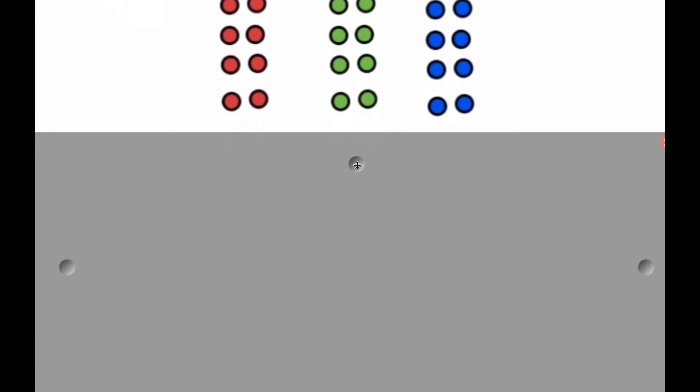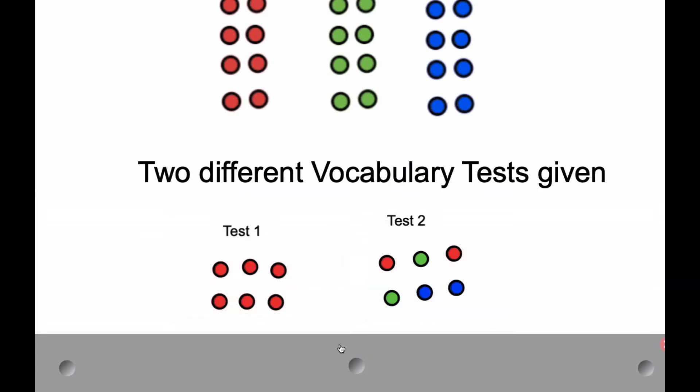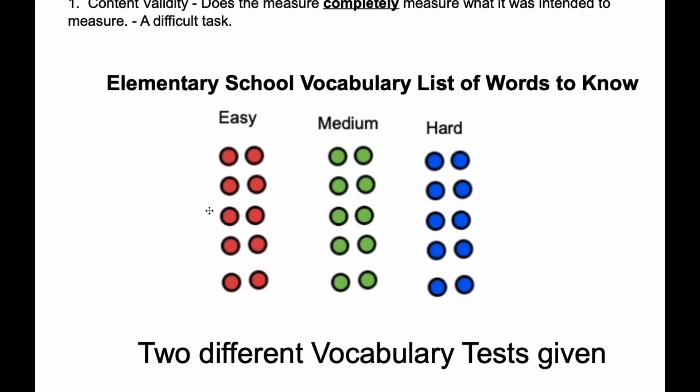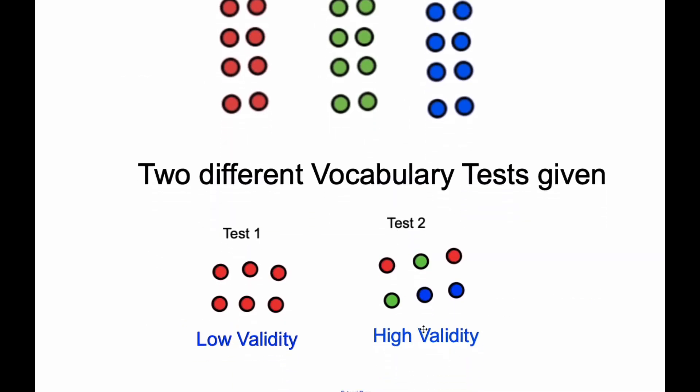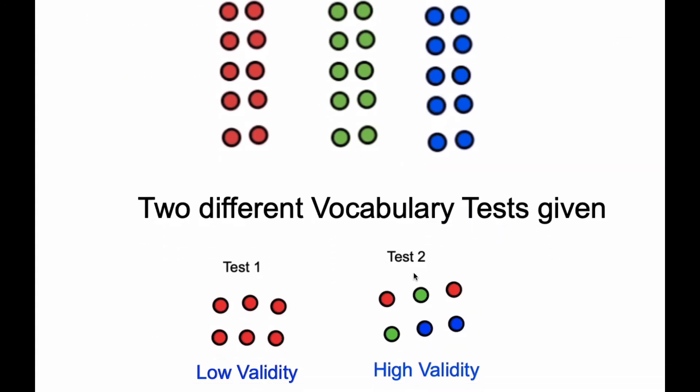The first test grabs all easy values, and the second test gives two easy, two medium, and two hard. Well, if that's the case, the easy test has low validity. It doesn't do a good job of testing what words you know, whereas this random assortment of questions does give a good test of the information that is known. It's cross-section, and so the validity of the test will be quite high because it measures all aspects.